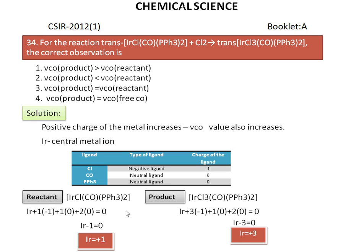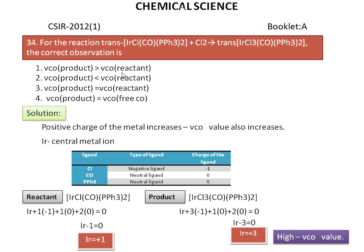Comparing the reactant and product, the product molecule has a higher positive charge. As stated, the positive charge of the metal increases, and therefore the ν(CO) value also increases. So the product molecule has a higher ν(CO) value. Checking the first option: ν(CO) product is greater than ν(CO) reactant — the correct answer is option one.